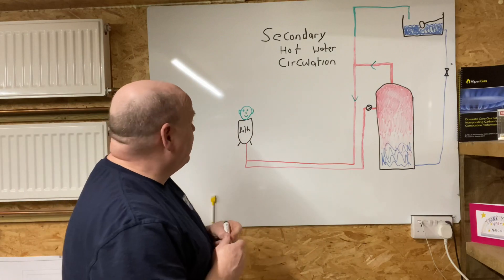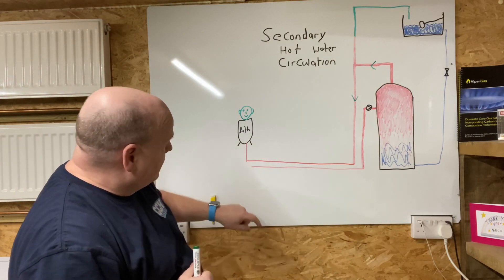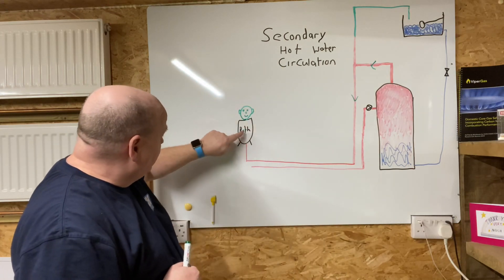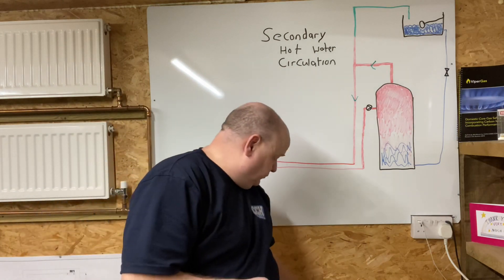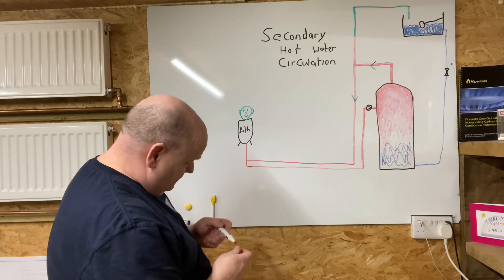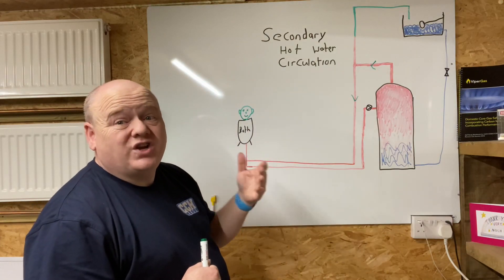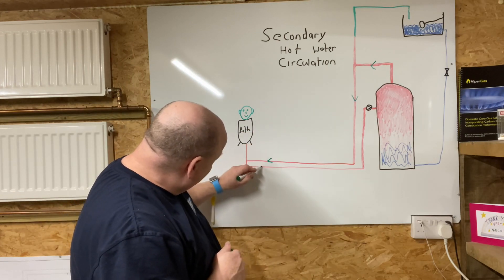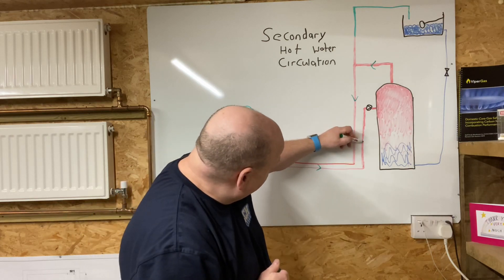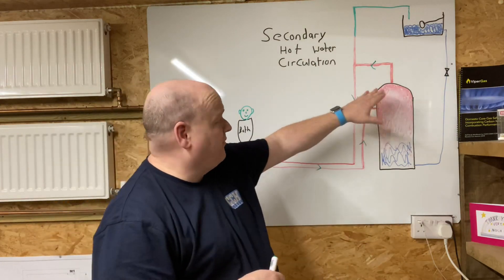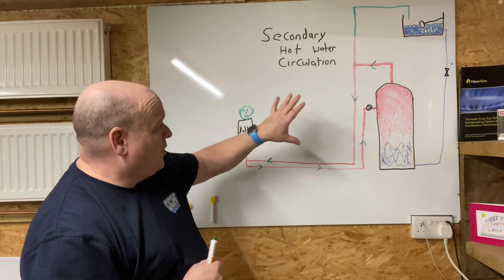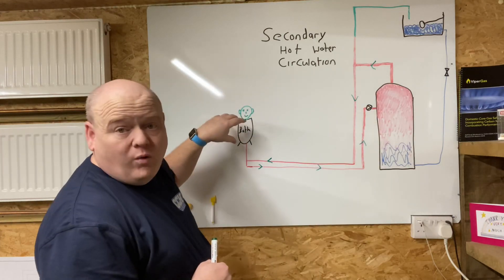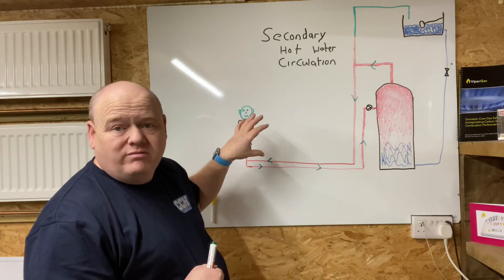On a normal system without a return, when you run this bath you've got to wait until the hot water travels all the way around to the bath. But what this pump does — when we connect this back up to the cylinder — it circulates the water all the way around, going this way and back into the cylinder. So it's circulating this hot water so that when you open the tap, the hot water is almost instant.